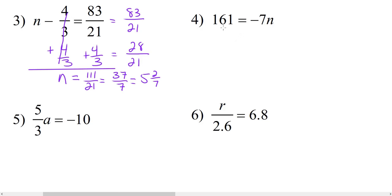For number four, we have 161 equals negative 7n. In order to get n alone, we need to get rid of this negative 7, and it is multiplying n. So the way we undo multiplication is by division. So we're going to divide both sides by negative 7. Remember, when undoing multiplication or division, you must keep the sign when you undo.